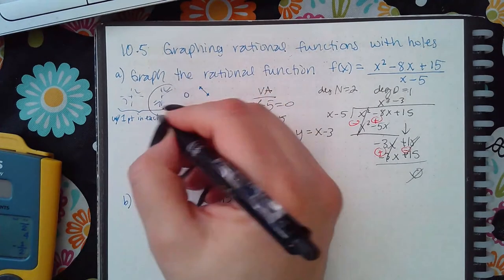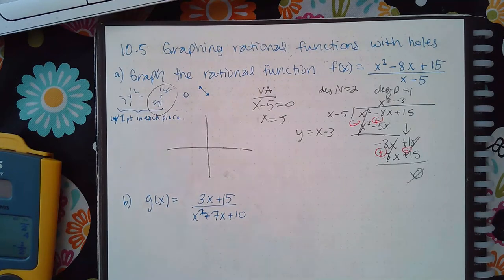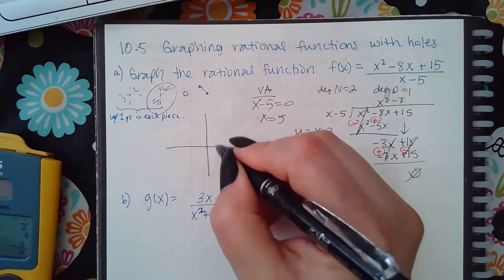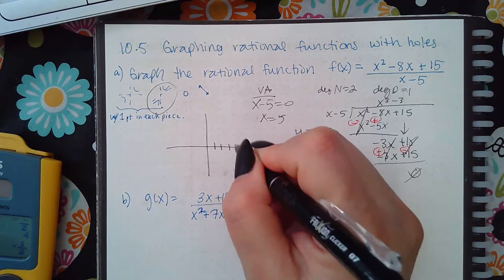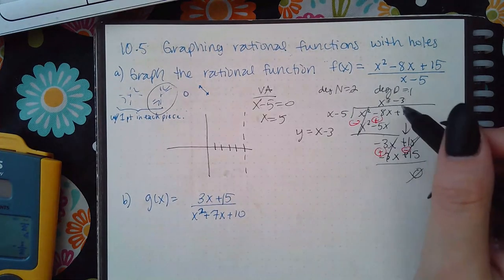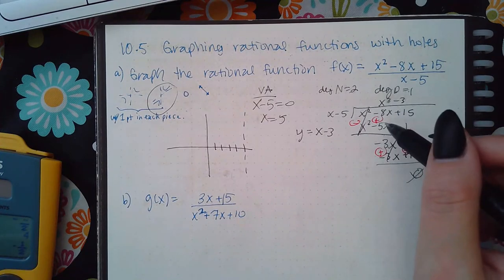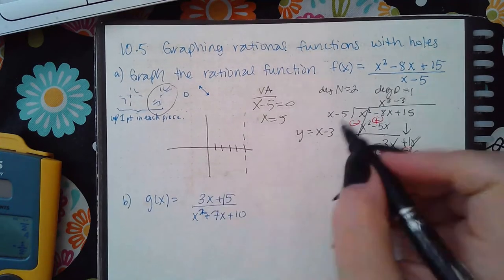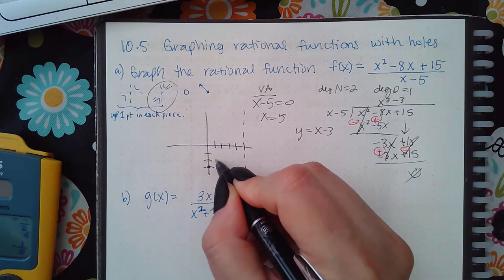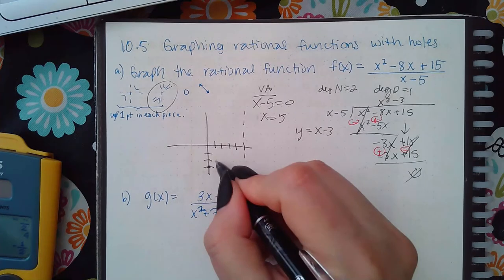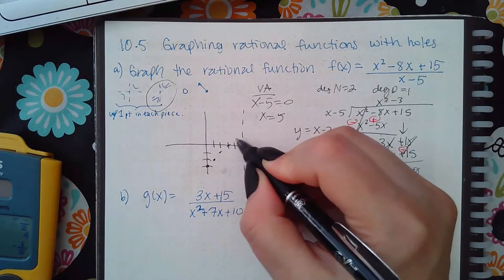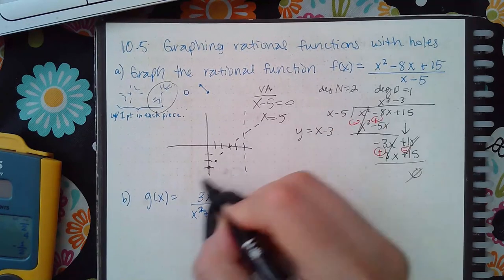Since I got a slant asymptote, I click that button. The first thing it makes you plot is the vertical asymptote — put it at x equals 5. Then it asks for two points to plot the slant asymptote.